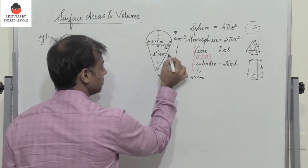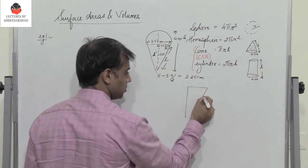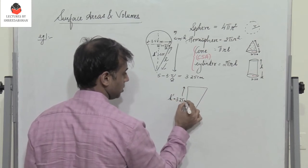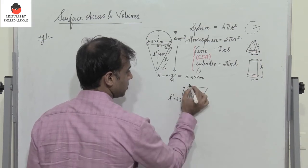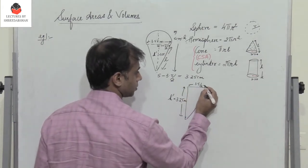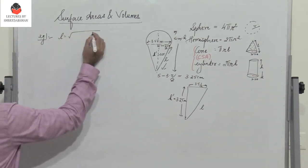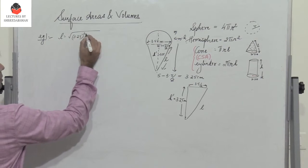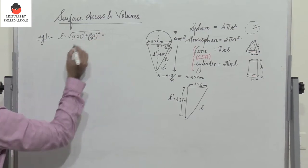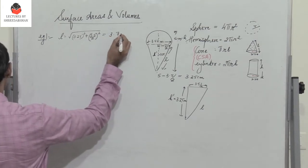We need to find the slant height L. This forms a right-angle triangle where h' = 3.25 centimeters and the radius is 3.5/2. So L = √(3.25² + (3.5/2)²) by Pythagoras theorem. When we calculate, we get L = 3.7 centimeters.